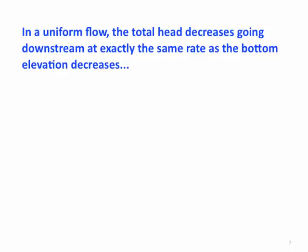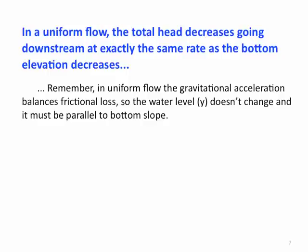Now, in a uniform flow, the total head decreases going downstream at exactly the same rate as the bottom elevation decreases. That is, the energy grade line is going to be parallel to the bottom slope. Remember, in a uniform flow, the gravitational acceleration balances frictional loss. This is why the water level, y, doesn't change as you go downstream. That is, the water level is parallel to the bottom slope.